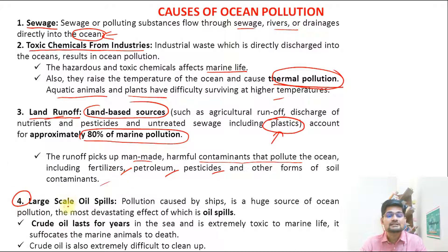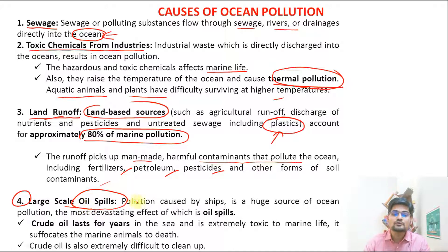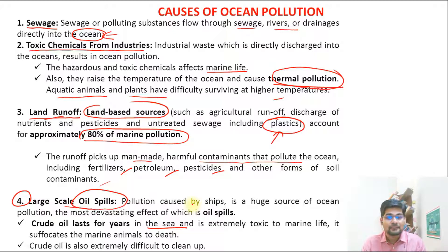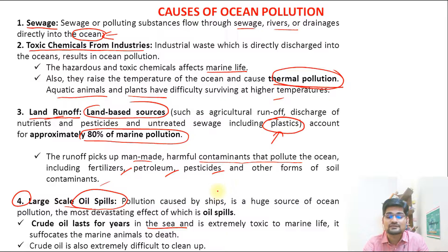The fourth important cause is large-scale oil spills, which have been in the news for a long time. The Siberian Russian oil spill was famously in the news recently. Crude oil lasts for years in the sea — it floats on the surface, does not dissolve easily, and is very toxic for marine life. Crude oil is extremely difficult to clean up, making it one of the biggest menaces for ocean pollution.